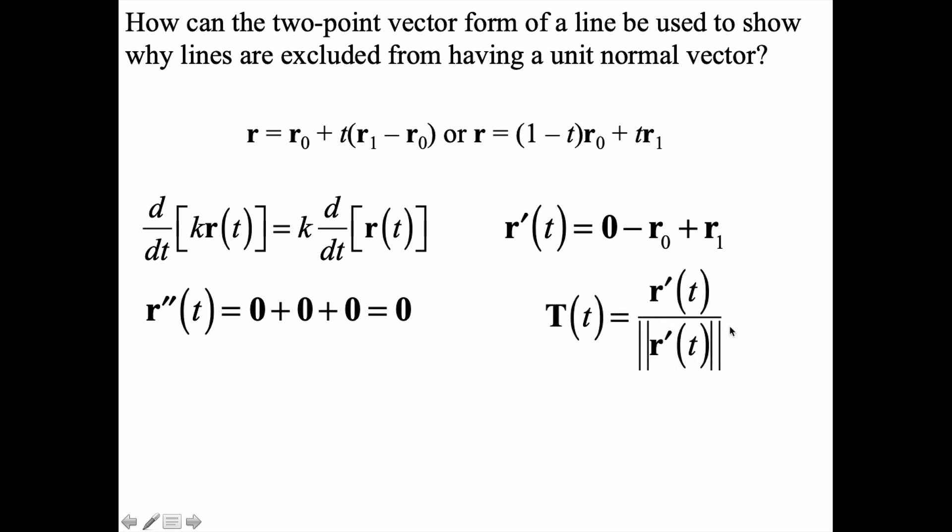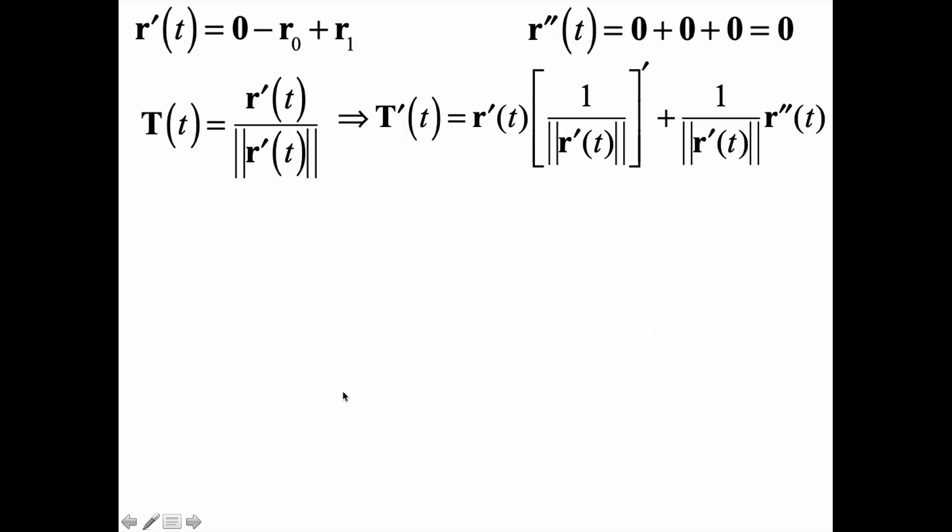We also need to remind ourselves what the formula for the unit tangent vector is: T(t) = r'(t) / ||r'(t)||. With all these tools now at our disposal, we can show why it makes no sense to say that a line has a unit normal vector. If we were going to try to get a unit normal vector N(t) = T'(t) / ||T'(t)||, we would first need to figure out what T'(t) is. T'(t) would be the derivative of T(t). But look carefully at this expression: r'(t) is a vector-valued function and 1/||r'(t)|| is a scalar function.